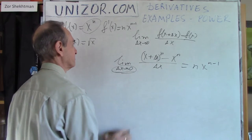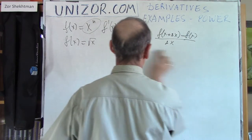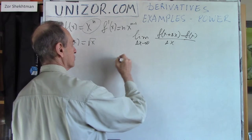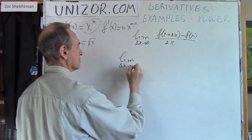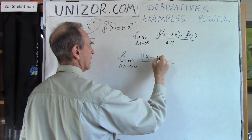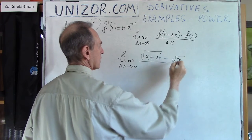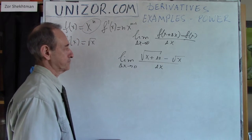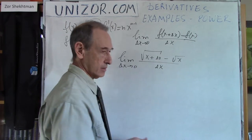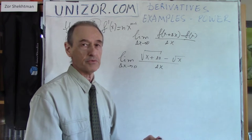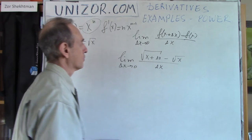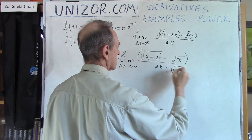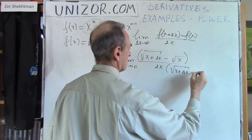Now let's talk about the square root. We will use exactly the same definition. I have to find the limit as Δx goes to zero of (√(x + Δx) − √x) divided by Δx. That's the increment of the function √x divided by the increment of the argument. This is two infinitesimals, so it's difficult to evaluate directly. The additional work is to multiply numerator and denominator by (√(x + Δx) + √x).